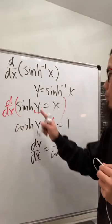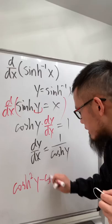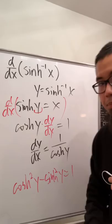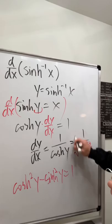Now we need cosh(y) in terms of x. Using the hyperbolic identity cosh²(y) − sinh²(y) = 1, and sinh(y) = x, we get cosh²(y) = 1 + x². Taking the positive square root (since cosh is always positive), we get dy/dx = 1/√(1 + x²).